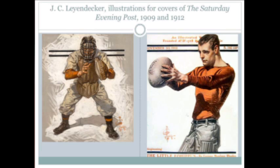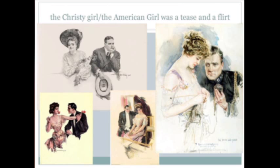Emerging simultaneously with the new wholesome but flirtatious outdoor college girl was the sexually transgressive woman — the dangerous woman. If the new American girl depicted by Fisher and Christie was a middle or upper-middle-class tease who remained a virgin, the dangerous woman was either working class or foreign born, and she used her irresistible sexuality to lure men to their doom. She was variously a party girl who frequented the dance halls, a gold digger, or a vamp — and in all cases, she emasculated and destroyed men.